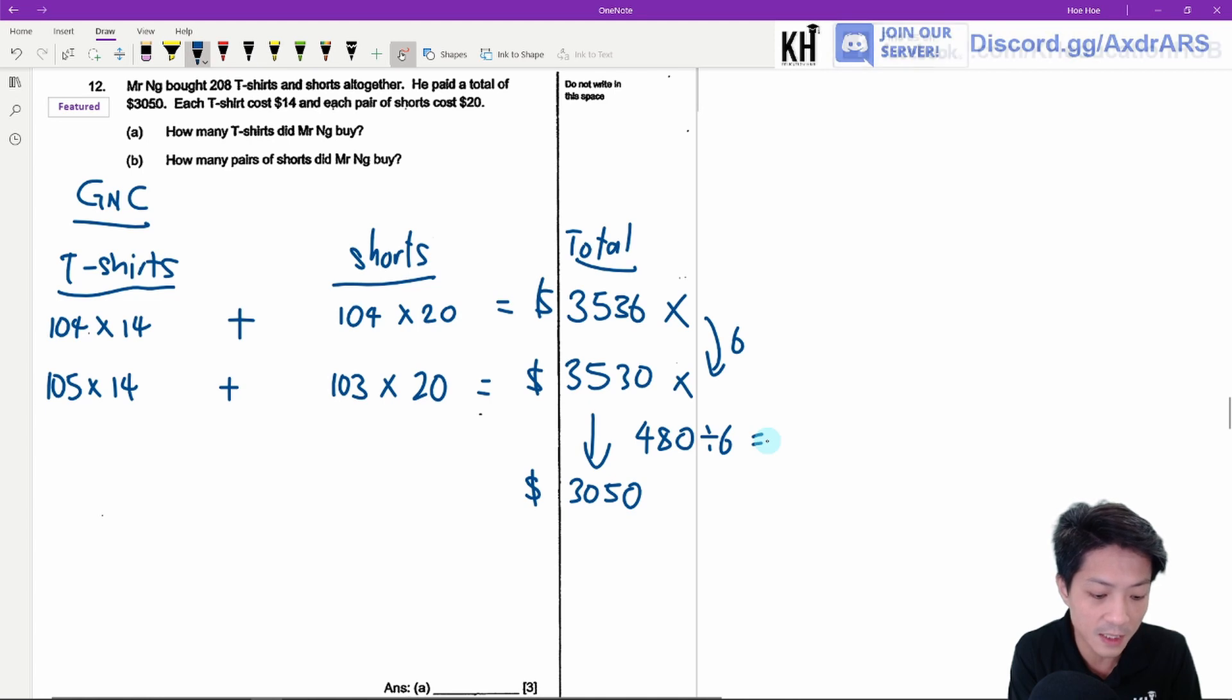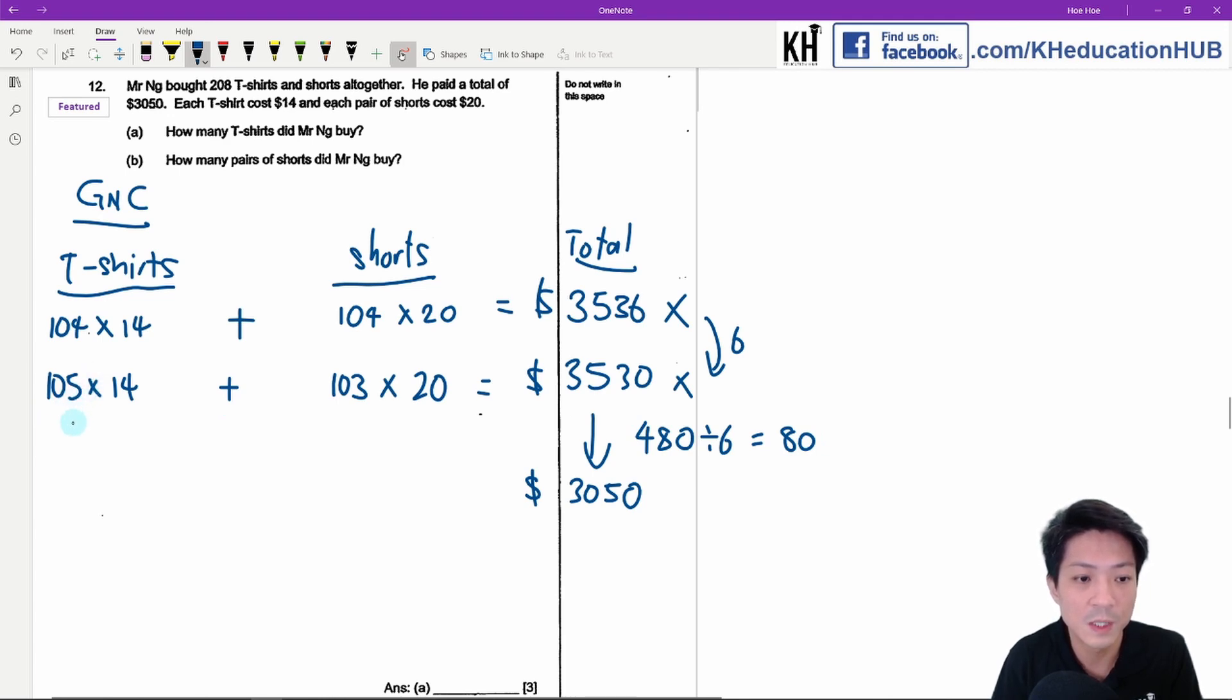Which is 80. So which means that what you need to do is you need to plus 80 over here and minus 80 over here.